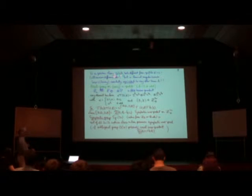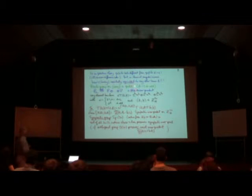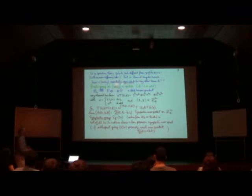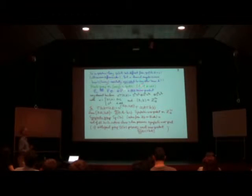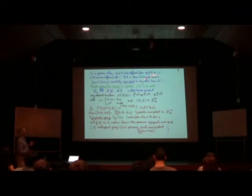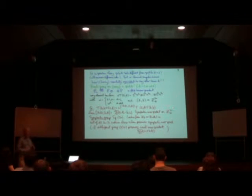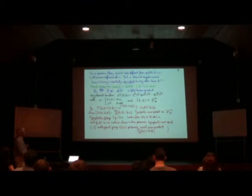Quantum theory for qubits looks rather different from qudits. Mathematically it's because 2 is the only even prime, and physically this mathematical distinction is reflected in the physics as well. Two-level systems behave differently from three-level systems in various crucial ways.